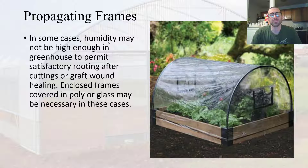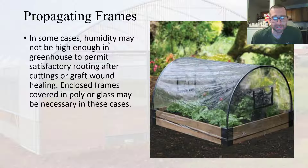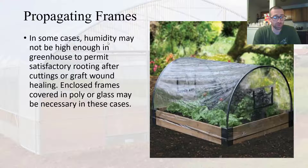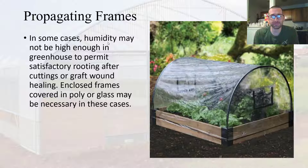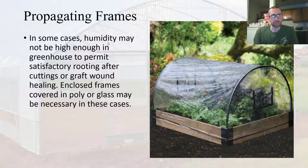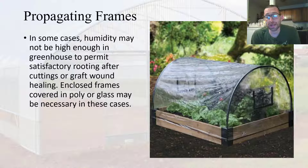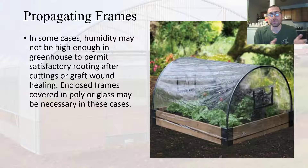Lastly, in terms of structures, is a propagating frame. This is utilized when you're using cuttings or grafting. When you take cuttings or do grafting right afterwards, your plants are susceptible to water loss. To counteract that, you often want to have them in a high-humidity environment. Your humidity in your greenhouse may not be enough for their needs, so you can build a propagating frame. Within that frame you can increase the humidity and add different types of poly fabric to block out sunlight, creating conditions that are more ideal for your cuttings or grafts and help them survive.